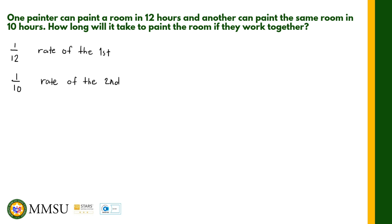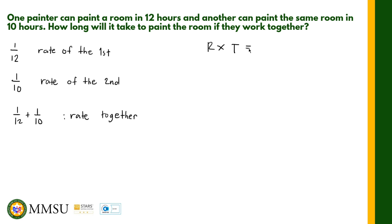Now, if they work together, their total rate is the sum of these two. So if they work together, their combined rate is 1 over 12 plus 1 over 10 per hour. Based on our formula, rate times time is equal to the work done, which is a fractional part of the total work. Since they are working together, the rate is 1 over 12 plus 1 over 10, multiplied by the time T, which is the unknown.